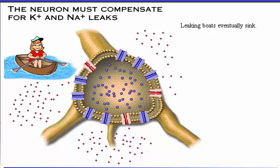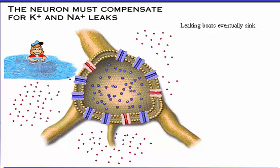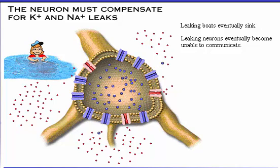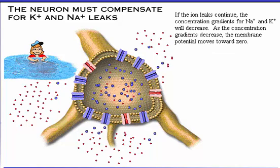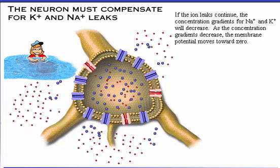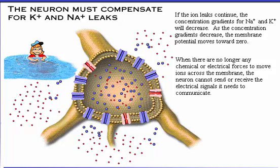Just as a boat that begins to leak will eventually sink, a leaking neuron will eventually fail to function. If ions continue to leak, the neuron will be unable to communicate. The concentration gradients for sodium and potassium will decrease. As the concentration gradients decrease, the membrane potential moves toward zero. When there are no longer any chemical or electrical forces to move ions across the membrane, the neuron cannot send or receive the electrical signals it needs to communicate.